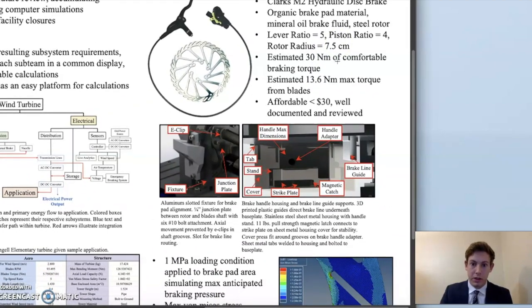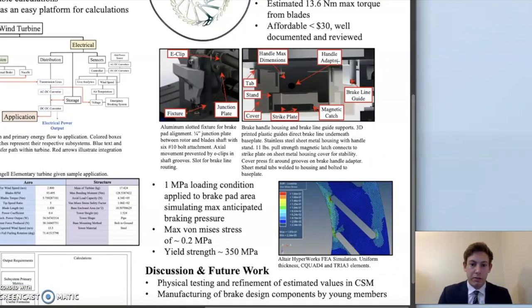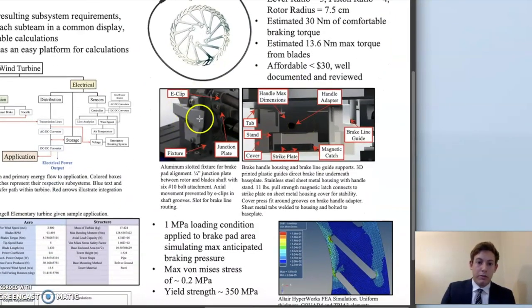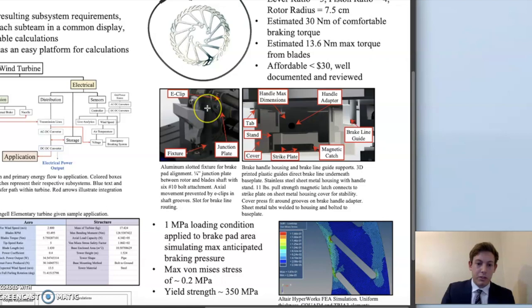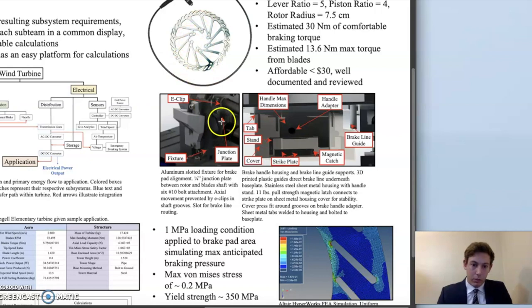Most of the mechanical design was done around the fixtures and housing for the brake pad and handle. For the brake pad, the fixture is made up of aluminum slotted pieces mainly bolted together into the base plate, but they're slotted so that the proper alignment between the brake disc and the pad can be achieved. Also, a junction plate of sufficient thickness is used between the rotor and the blade shaft, which is supported axially via eclipse.